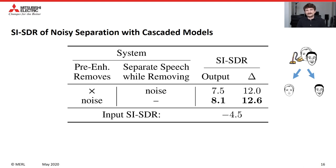Here are results of the cascaded models in noisy separation. The first row is the baseline case where we remove noise as part of the separation system. The second row uses pre-separation enhancement to remove noise prior to separation. We find that using pre-separation enhancement improves performance on noisy separation.